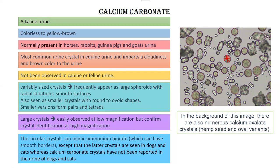The smaller variants form pairs or tetrads. In the background of some images you can also see numerous calcium oxalate monohydrate crystals in the hemp seed and ovoid variants, as discussed in previous videos. Small crystals are round to ovoid, while large crystals are observed at low magnification — if you have a urine sample under the microscope, these large crystals will easily be seen at low magnification.